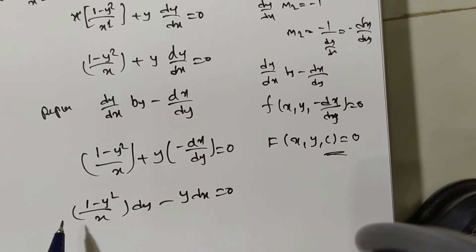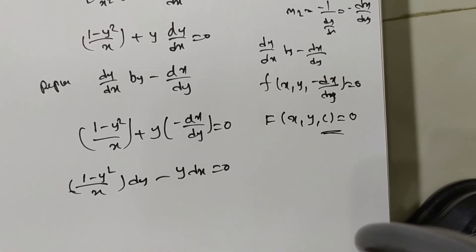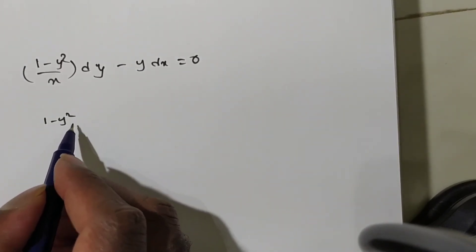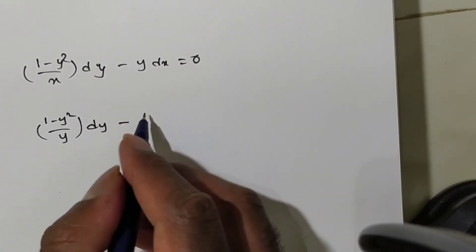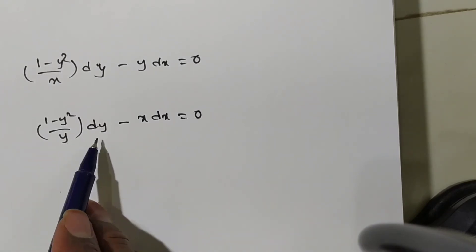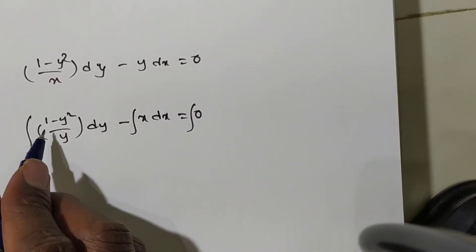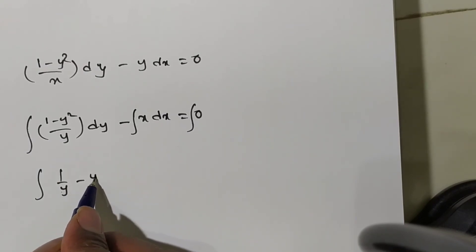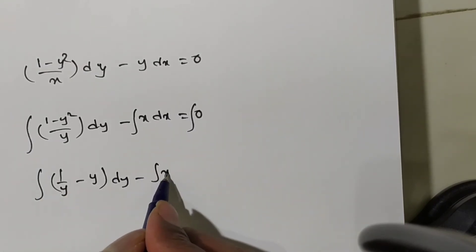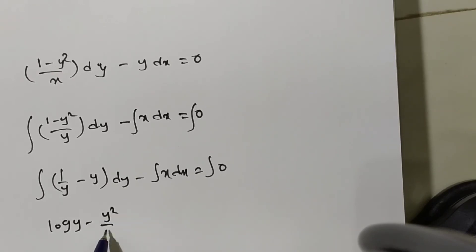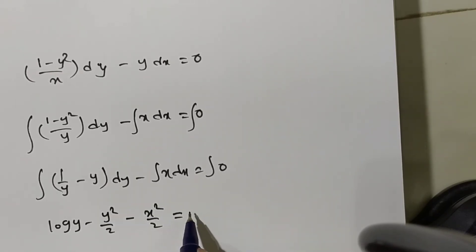Separating variables: the dy coefficient should be a Y-term and the dx coefficient an X-term. Rearranging: [(1 − y²)/y] dy − x dx = 0. Integrating both sides: ∫(1/y − y) dy − ∫x dx = constant. This gives log y − y²/2 − x²/2 = log C. Taking log terms to one side: log y − log C = (x² + y²)/2, i.e., log(y/C) = (x² + y²)/2.